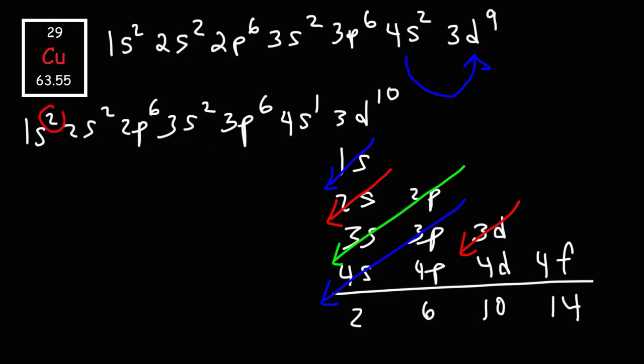So if you were to add the exponents, it will still add up to 29. So far, this is 10, 12, 18, 19, 29.